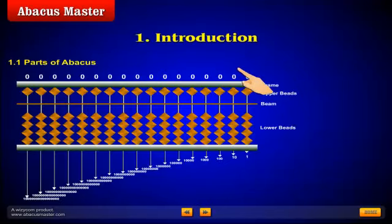The Introduction. This is a 17-row Abacus. You have upper beads and the lower beads. The lower beads, each bead has a value of 1 and the upper bead has a value of 5. Each column is a unit. So this will be the 1's unit. This will be 10's, 100's, 1000's and so forth.